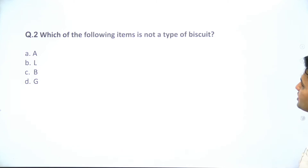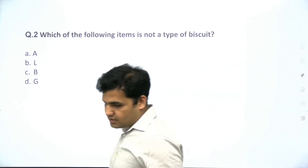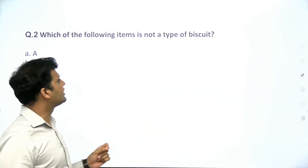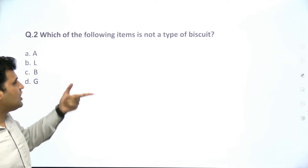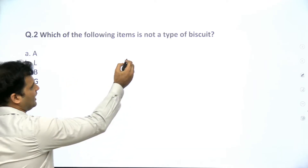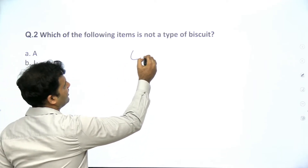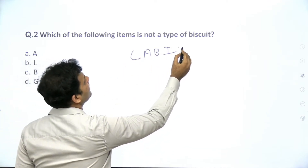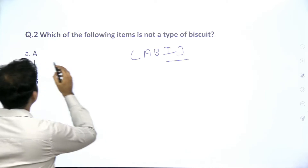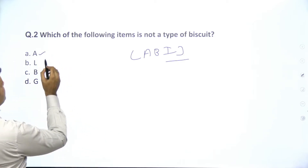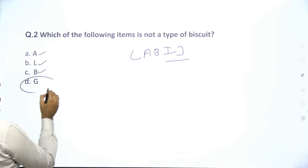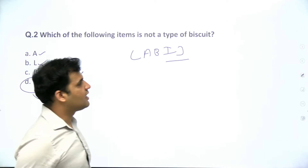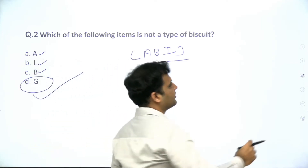Question 2 asks: which of the following is NOT a type of biscuit? The biscuits are A, B, I, J, and L. Among the options given, A is a biscuit, B is a biscuit — but G is not a biscuit; G is a candy. So the answer is D (option corresponding to G).